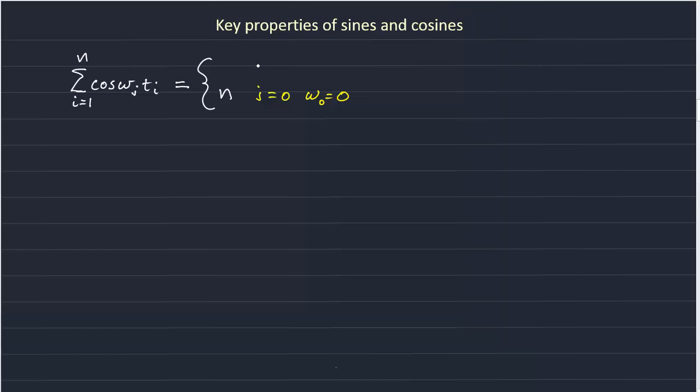So when j is not equal to 0, then the solution is 0.